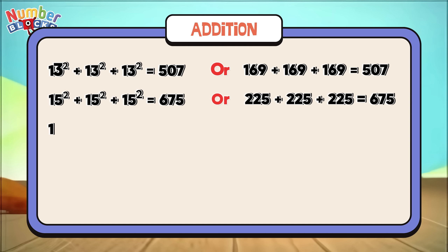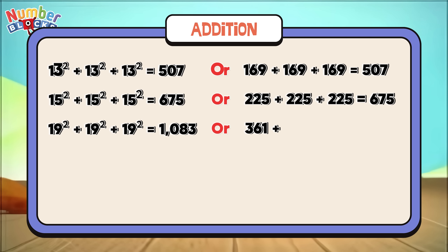19 square plus 19 square plus 19 square is equals to 1,083, or 361 plus 361 plus 361 is equals to 1,083.